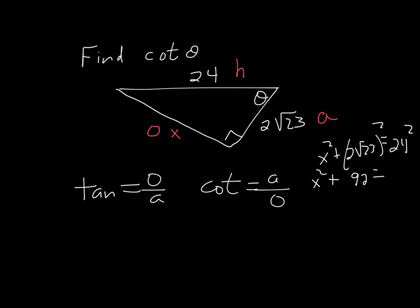And then 24 times 24 is 576. Then we're going to subtract 576 minus 92. Got my calculator out here. It's equal to 484. And then just hit your square root of that and you get 22.